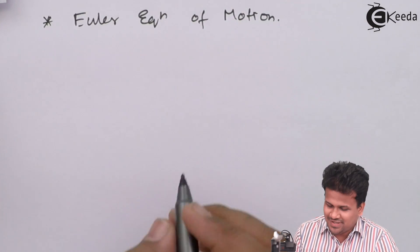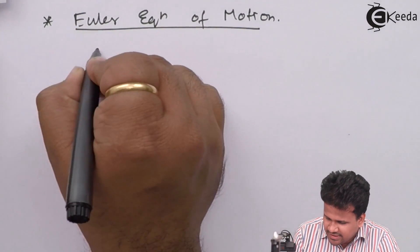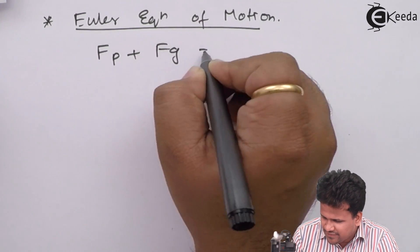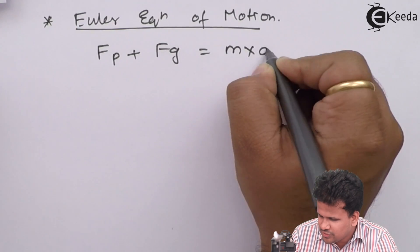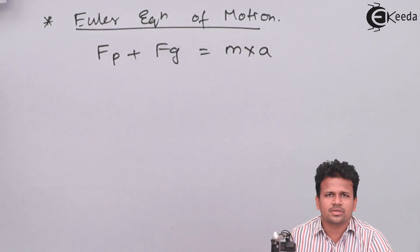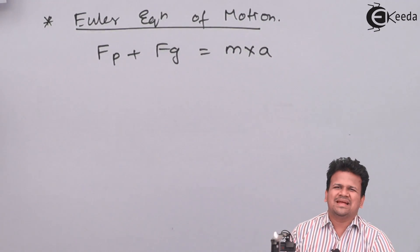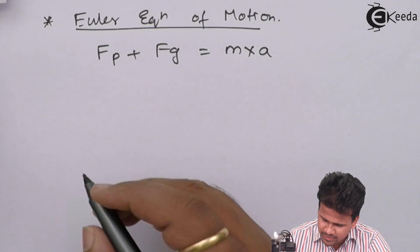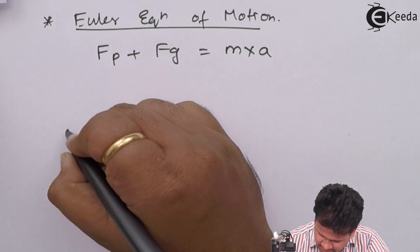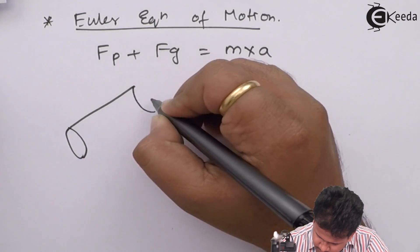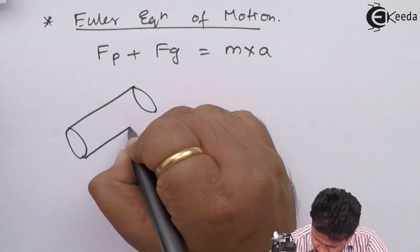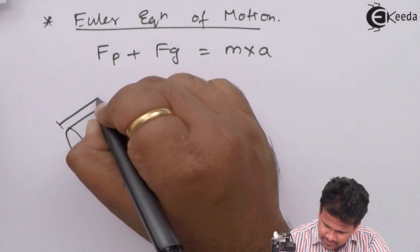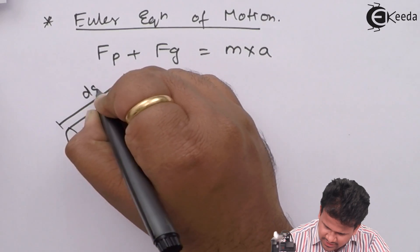In Euler's equation, we have studied that the sum of force due to pressure plus force due to gravity is equal to mass into acceleration in that particular direction. So let us assume a control volume at some angle theta. Let us consider this as a control volume having a length dS.